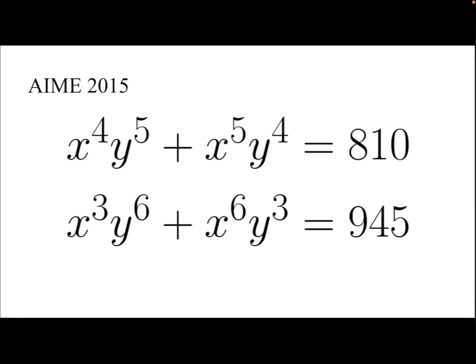In this video, we're going to take a look at a problem from AMC 2015. To solve both equations: x to the power 4 times y to the power 5 plus x to the power 5 times y to the power 4 equals 810, and x cubed times y to the power 6 plus x to the power 6 times y cubed equals 945.